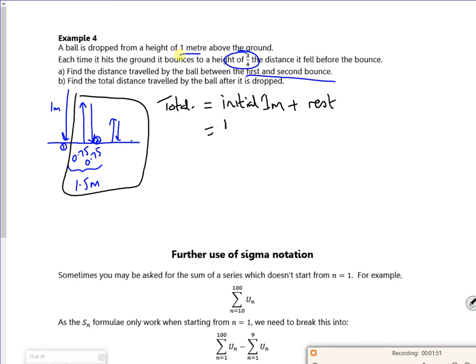And the rest of it is a sum to infinity. So a is 1.5, and r is 0.75 there. And if I do that, it should give me 7 meters. You've got to get your head round that. This is the bit when that sum to infinity happens.